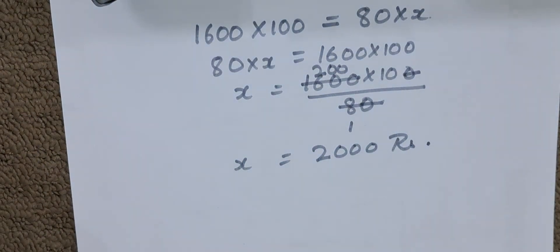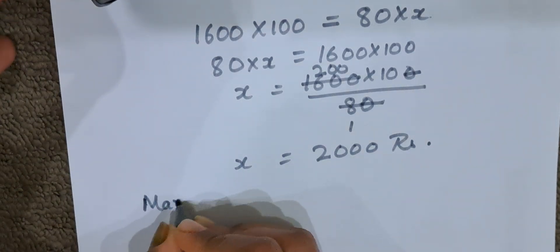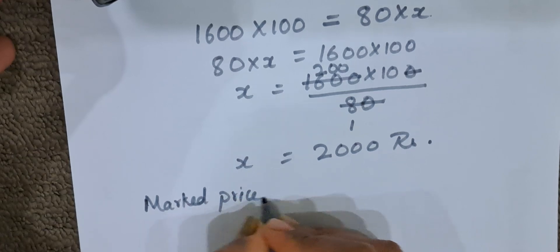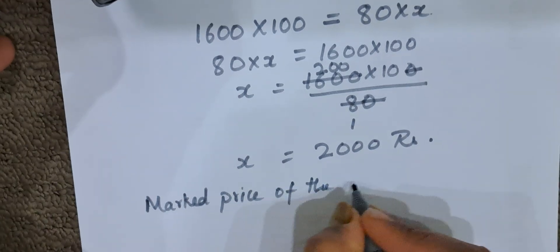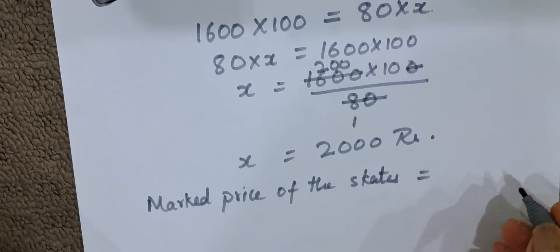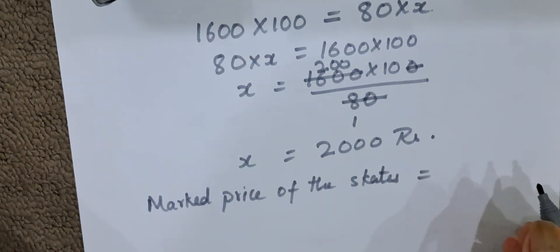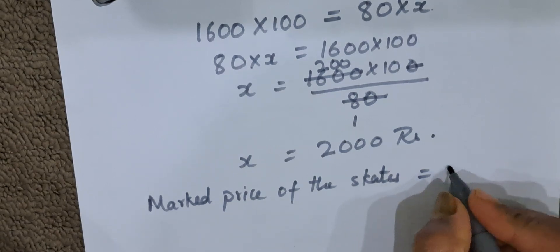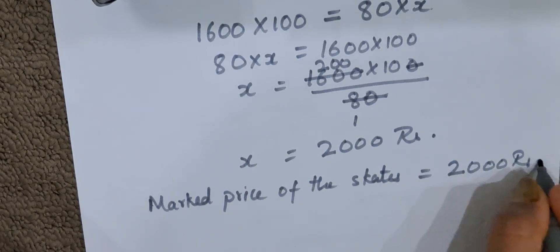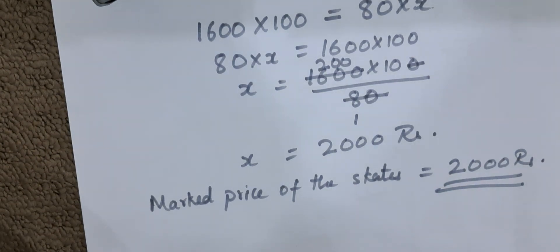We have easily calculated the whole amount — that is the marked price. He paid 80%, which is 1600, so 100% of the amount is the marked price. Marked price of the skates is 2000 rupees. This is the answer. If you found this video helpful, please like and subscribe my channel. Thank you.